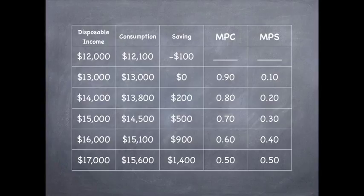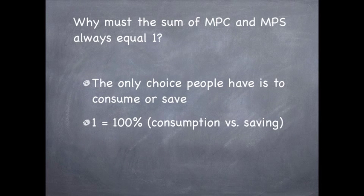And finally, we have $17,000 for disposable income, $15,600 for consumption, $1,400 for savings, $0.50 for a change in consumption, and $0.50 for a change in savings.